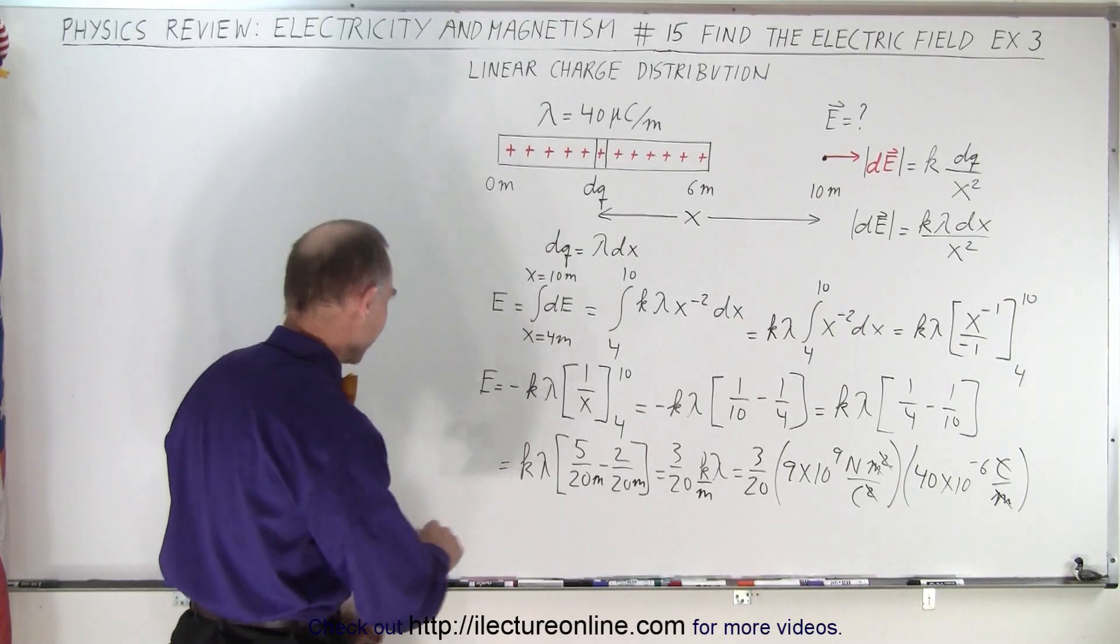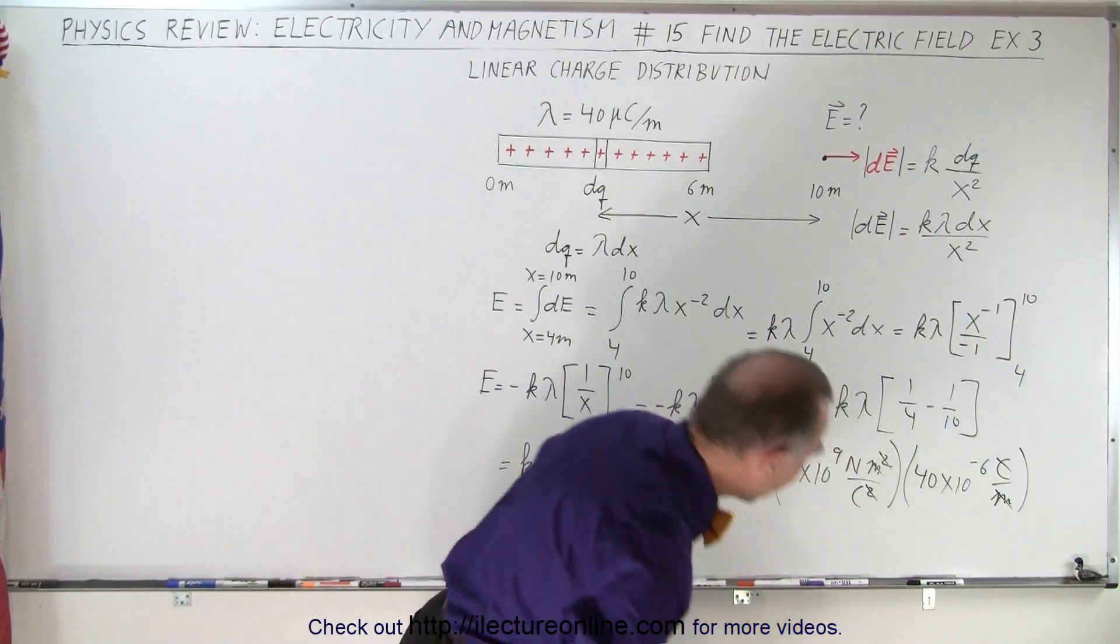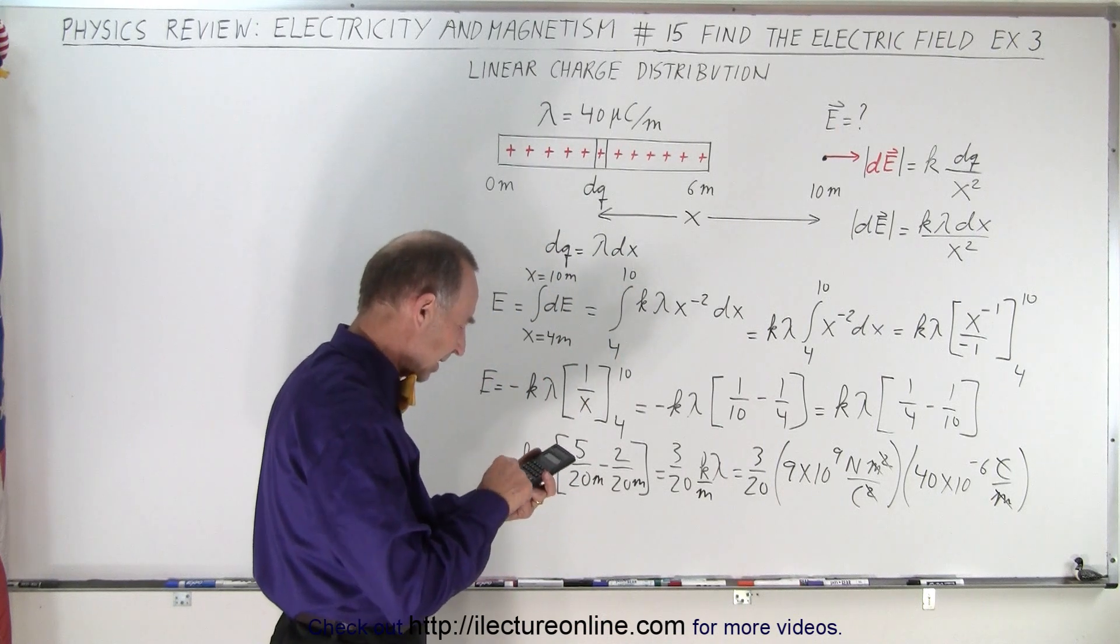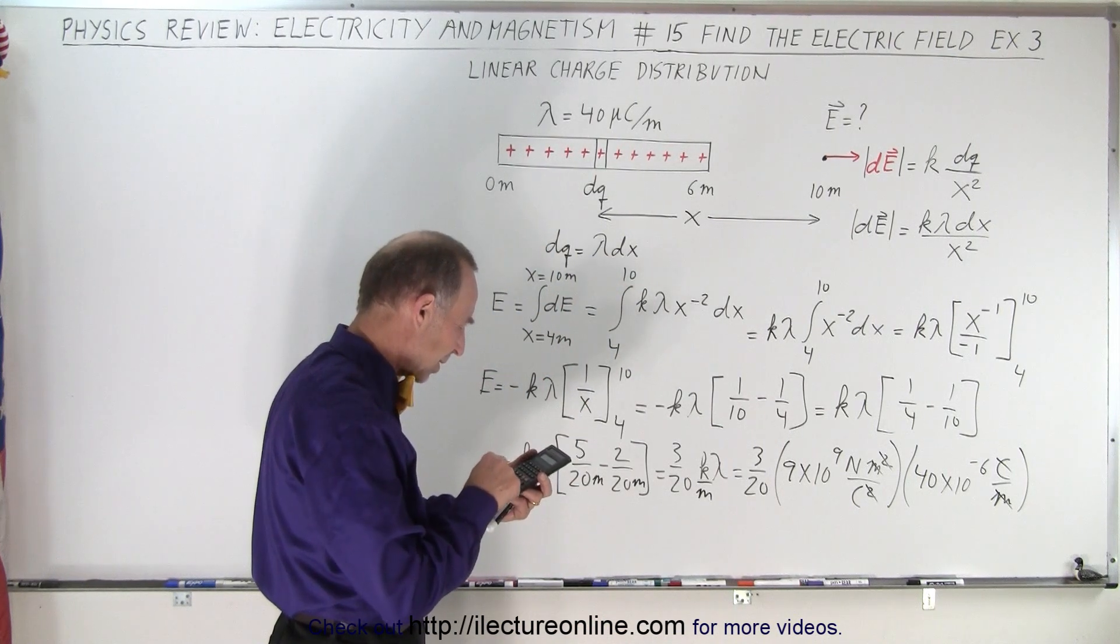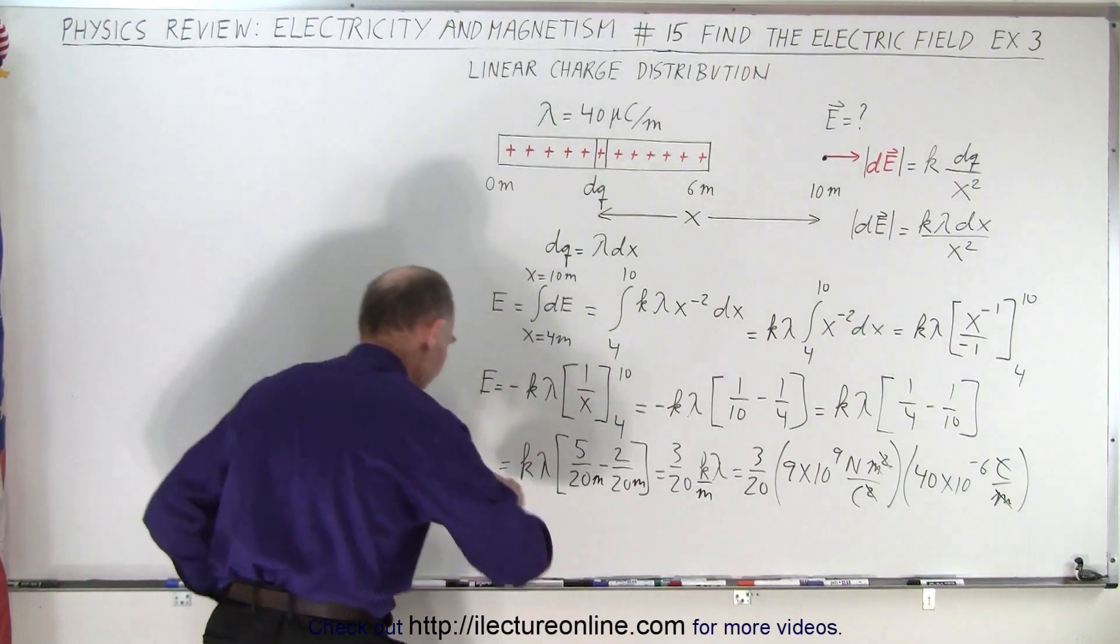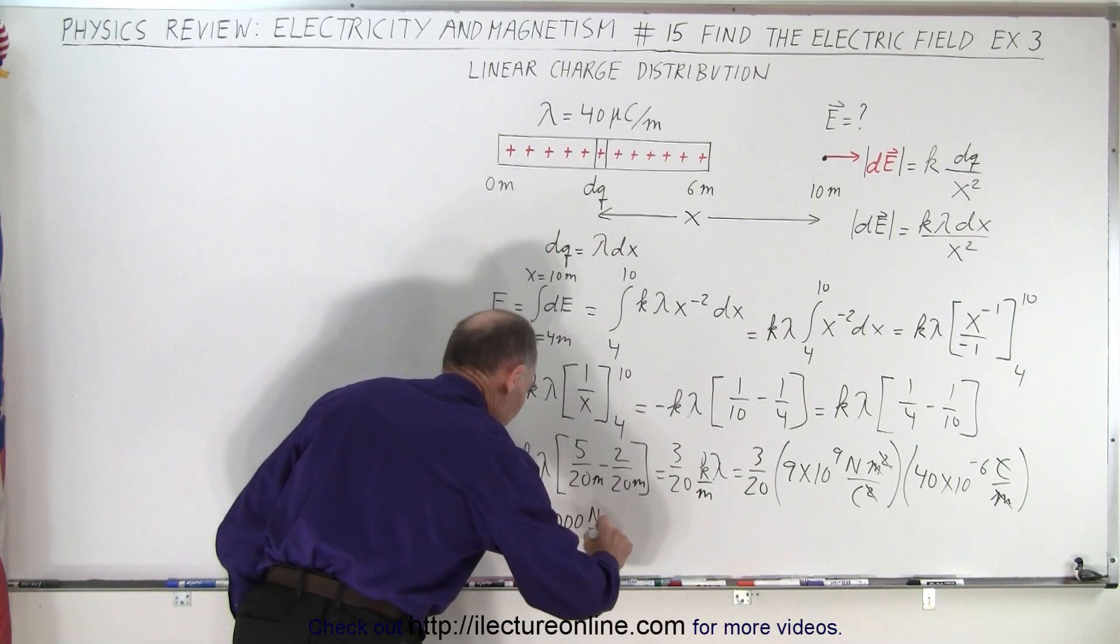For a while there I lost a meter somewhere. Okay, finally, we can grab a calculator and figure it out. We have 9e9 times 40e minus 6 times 3 divided by 20 equals, and we get 54,000 newtons per coulomb.